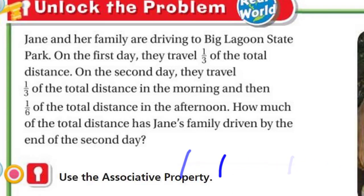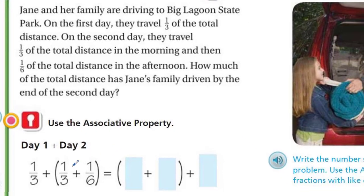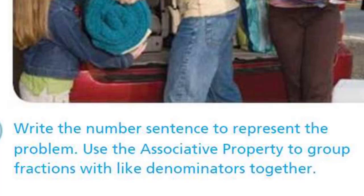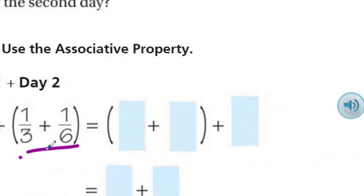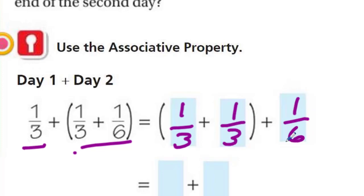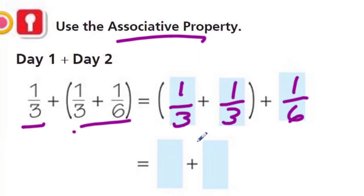Down below it says to use the associative property to solve. Day one plus day two — one-third represents the first day. And then the one-third plus one-sixth, because on the second day they traveled one-third in the morning and one-sixth in the afternoon. There we group them together. It says write the number sentence to represent the problem. Use the associative property to group fractions with like denominators together. I can see that one-third and one-third have the same denominator, so I'll put one-third plus one-third in parentheses, leaving the one-sixth on the outside.